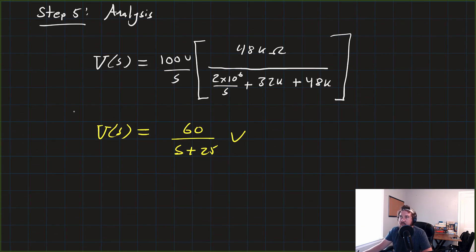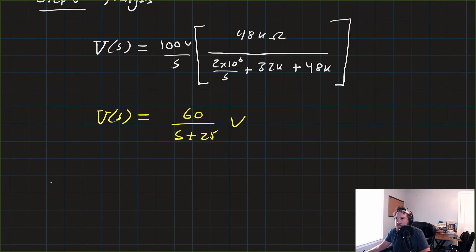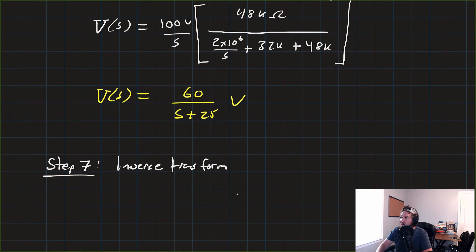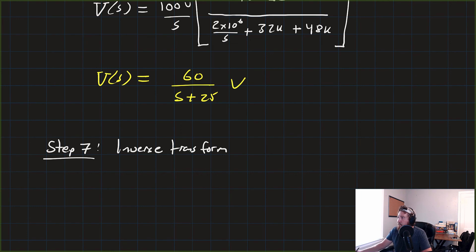Now, I'm going to skip a step because the textbook did it kind of weird. So I'm actually going to jump straight from step 5 to step 7, which is now do the inverse transform to get our V of T. So let's see, the inverse Laplace transform of 60 over S plus 25 is already in that nice, neat partial fraction expansion. So that's going to be equal to just 60 times e to the minus 25t times that unit function, U of T, in volts.